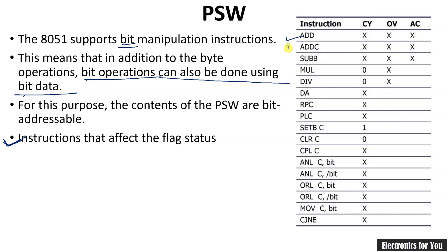Here is a list of instructions that affect different flag statuses. The ADD, ADDC, SUBB, MUL, and DIV instructions can affect the carry and overflow flags. For MUL and DIV, carry is shown as 0 (not affected), while 'X' indicates the flag result is unknown — it may be 0 or 1. In many cases only the carry flag is affected, whereas the auxiliary carry flag is affected only by addition and subtraction, and the overflow flag is affected by addition, subtraction, multiplication, and division.